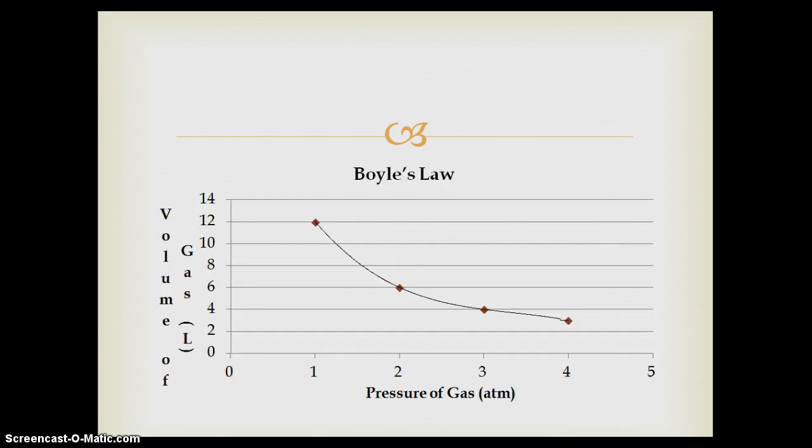This is a slide of Boyle's Law. This slide shows us the graph trend of Boyle's Law. Notice, when we start at one ATM of pressure, the volume is 12 liters. When we move to two ATM of pressure, the volume is now at six liters. So as you increase the pressure, as you move from left to right on the x-axis, the y-axis actually decreases.